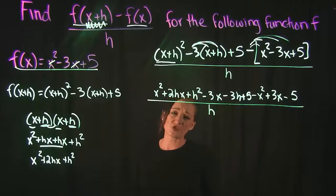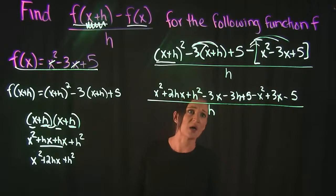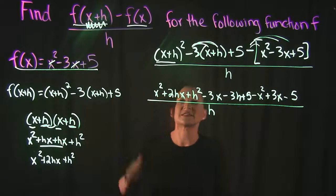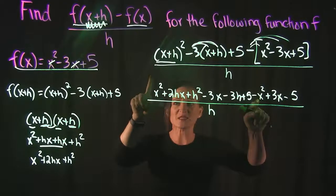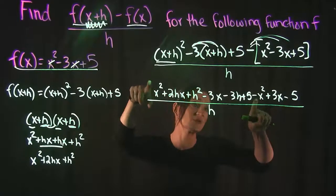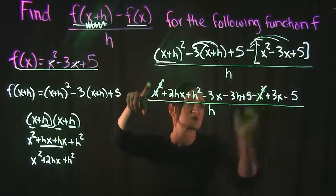Now we need to see what like terms can either cancel out or combine. So let's see. I have an x squared here, and I see I have an x squared here. This is a positive x squared, this is a negative x squared, so those actually cancel out to zero.